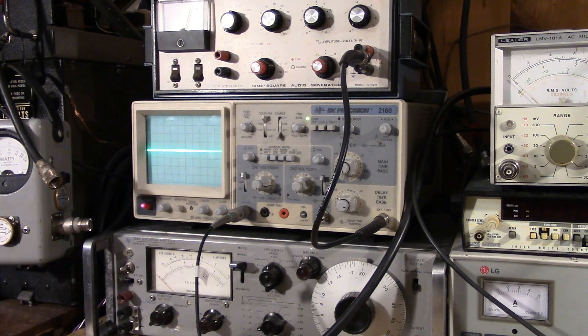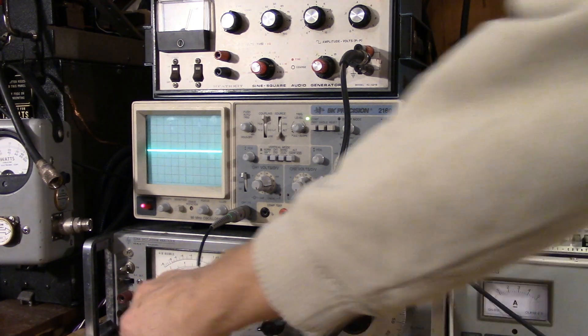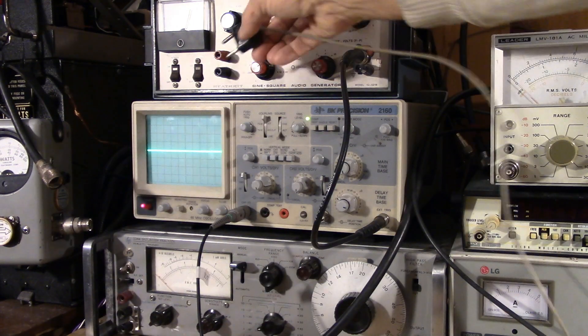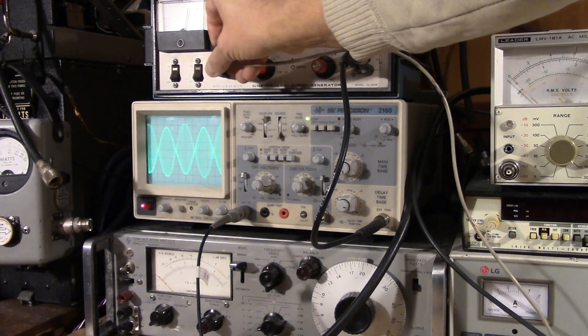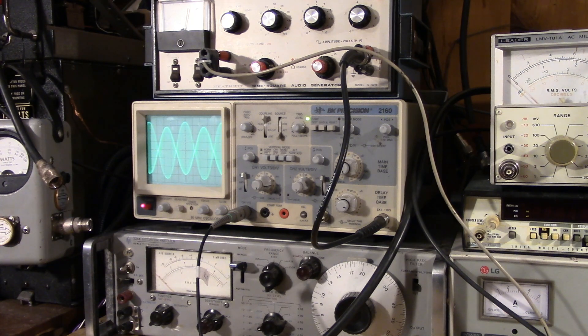So what does double sideband look like when you are modulating? That's interesting to people. Let's attach the modulation source. That's the classic DSB pattern that you'll see on your scope.